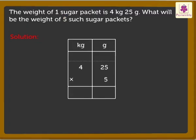Here, we first multiply the grams and then the kilograms. Now, let us multiply the digits in the grams column. 5 into 5 is equal to 25. Carry 2 tens to the tens column and write 5 in the ones column.